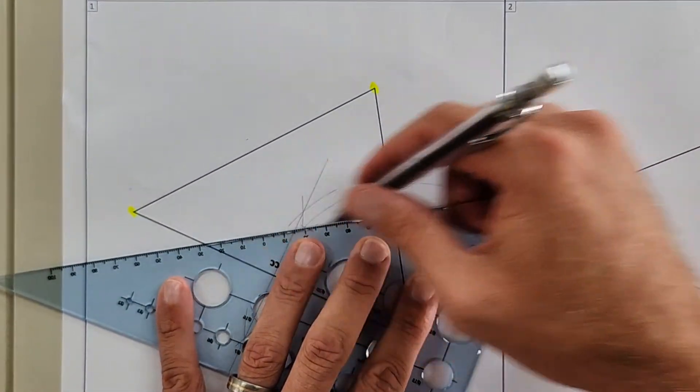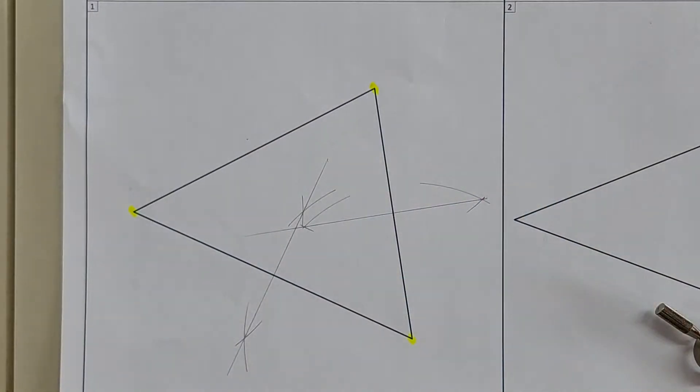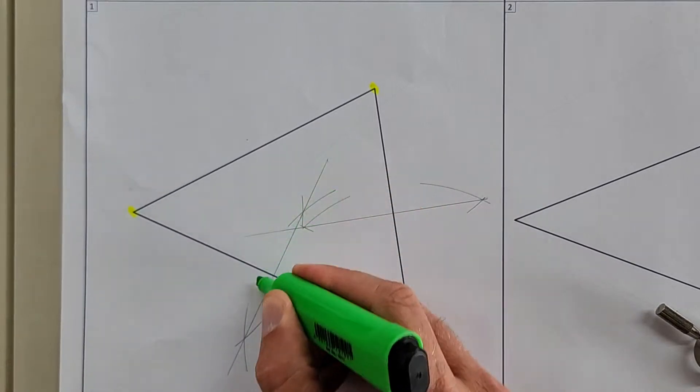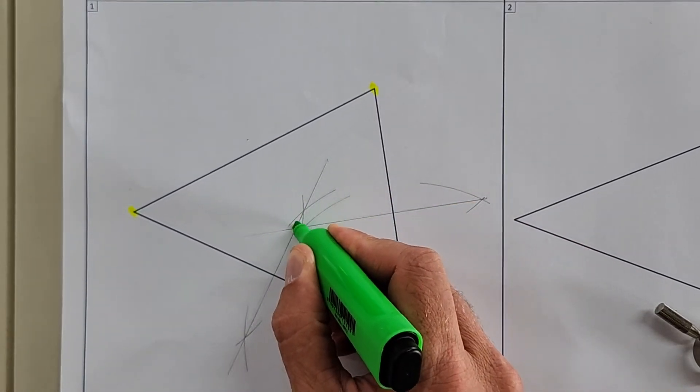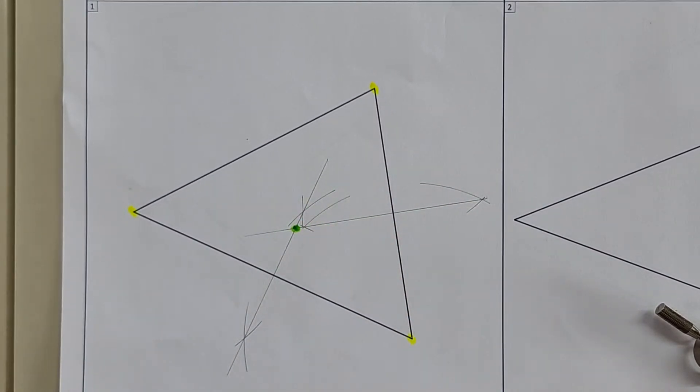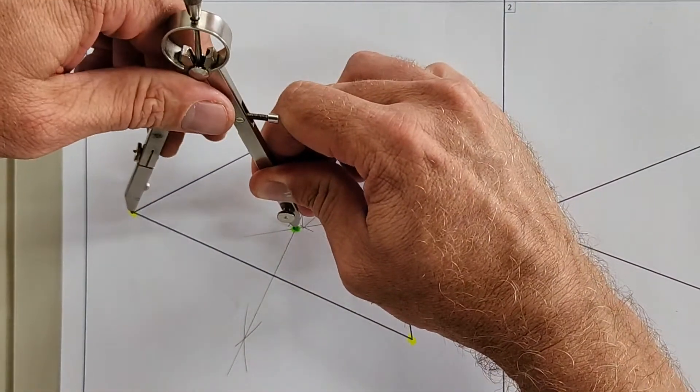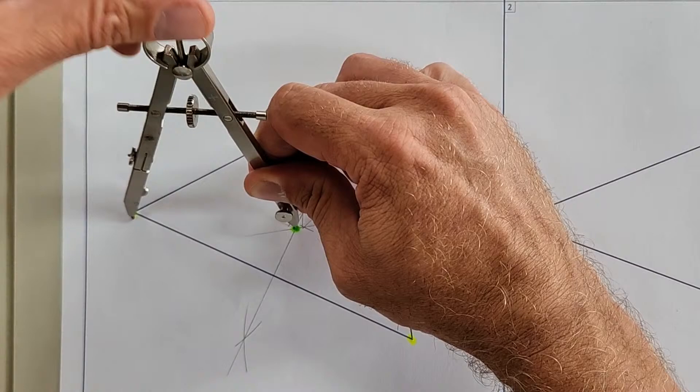Hold onto your drawing board because you are going to be stunned. You can now do the same here and what are you going to find? You are going to find a place where these two lines cross. Are you with me? And look at this, you take your compass, set it on any one of these three corners.